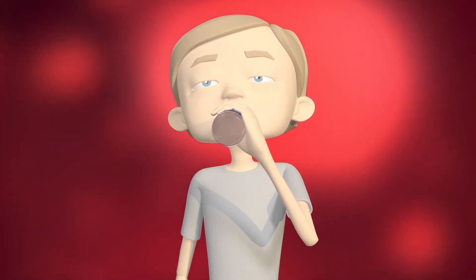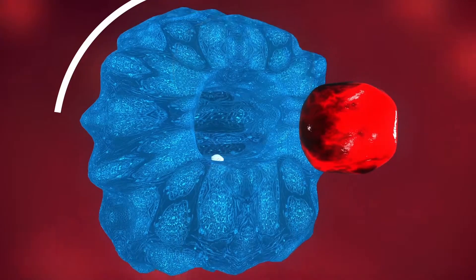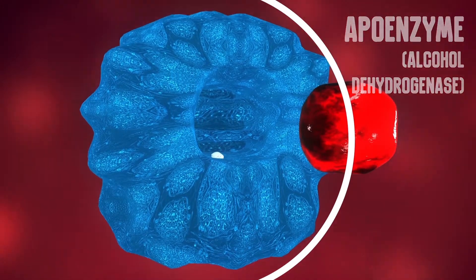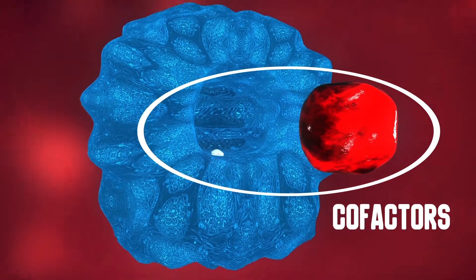If you consume alcohol, your stomach will get to work digesting the ethanol using the enzyme alcohol dehydrogenase. Enzymes are made of two parts: the large protein structure known as the apoenzyme, and the smaller variable molecules that form part of the active site, called cofactors.